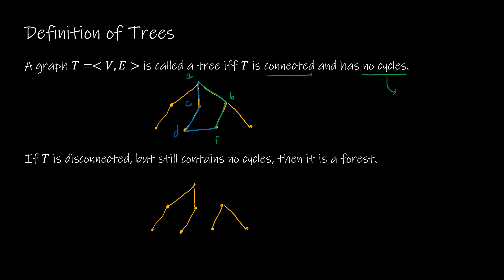From here we can see this is no longer a tree because: (a) it has a cycle, and (b) there is more than one way to get to a particular vertex from another vertex.